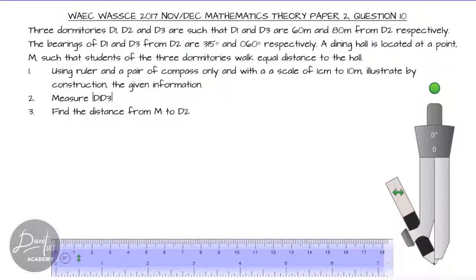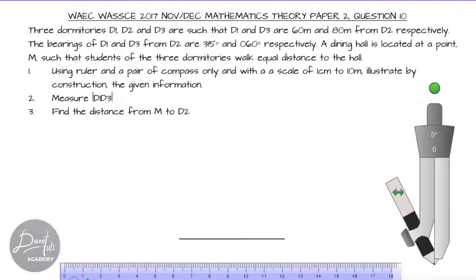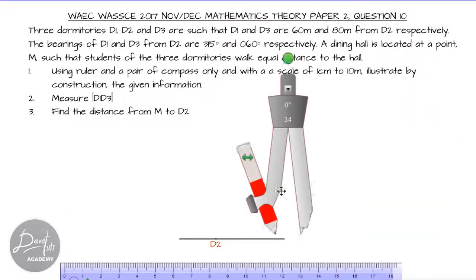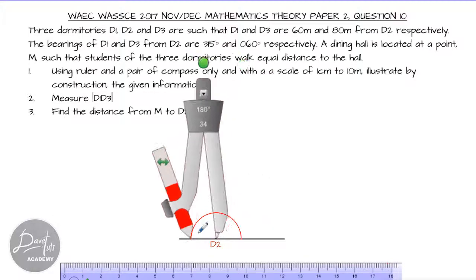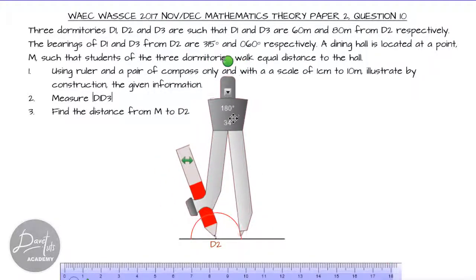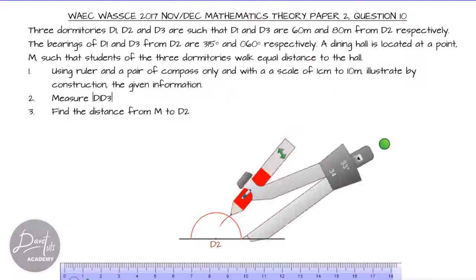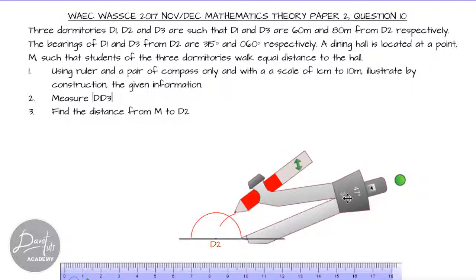First we want to identify point D2. We draw a straight line as our reference and locate point D2. We label this as dormitory 2. Then we want to measure 60 degrees from the north of D2. We draw a straight line at 180 degrees, and using the same radius used to construct that 180-degree line, we work toward constructing 60 degrees from the right.